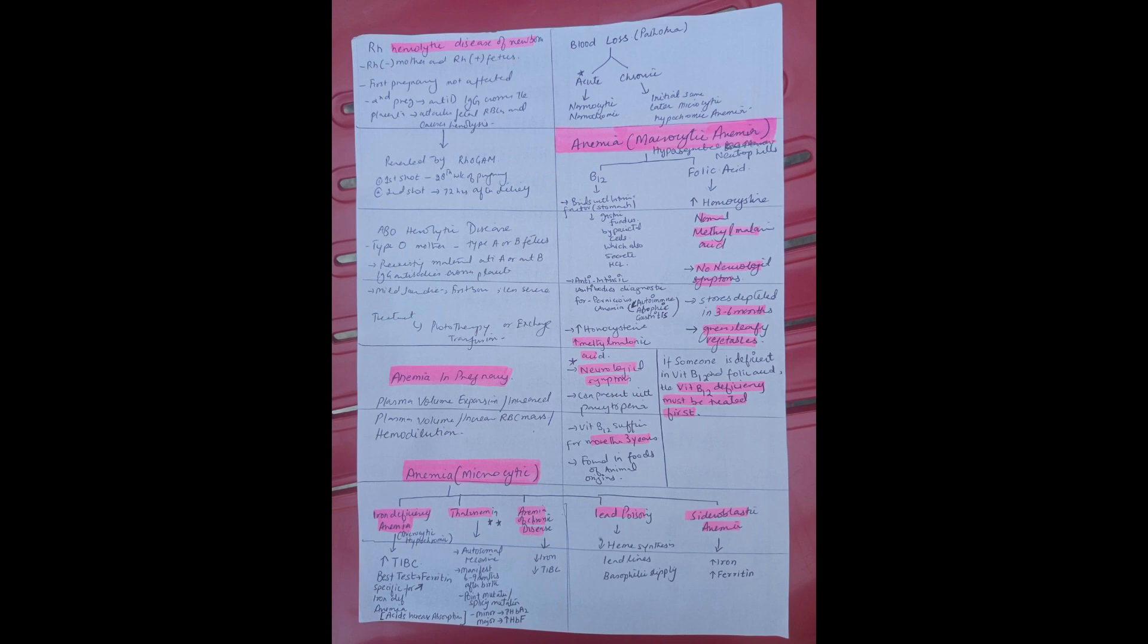B12 binds with intrinsic factor. Intrinsic factor is released by the stomach, particularly the gastric fundus, and the cells which are responsible for secreting them. Intrinsic factor is released by parietal cells which also secrete HCl. Anti-intrinsic antibodies are present in pernicious anemia and they are diagnostic for this disease.